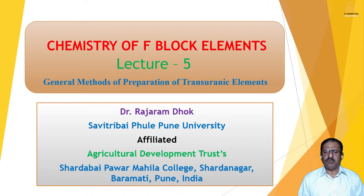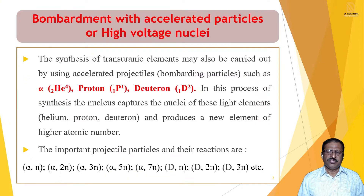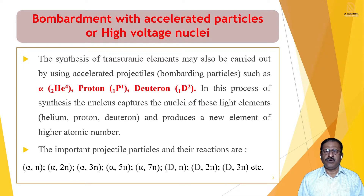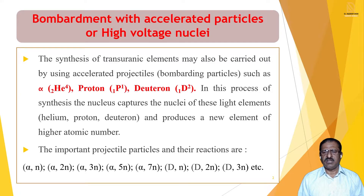General Methods of Preparation of Transuranic Elements. In the last lecture, we have seen the first method for the preparation of transuranic elements, that is neutron bombardment. Now there are again two methods. The second method is bombardment with accelerated particles, also called high voltage nuclear. In this method, instead of neutron bombardment, bombardment of accelerated particles is carried out — high voltage nuclei are bombarded on the target nucleus.